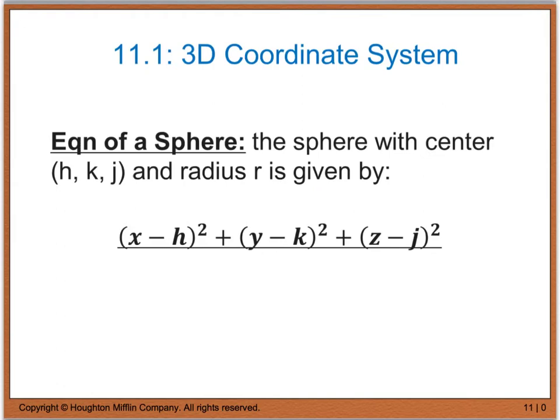Just as when we were dealing with a 2D coordinate system and we were dealing with a circle, now we have a 3D coordinate system, so we can deal with shapes like spheres. When we're dealing with a sphere, the general equation is very similar to that of a circle, but we have to add that third dimension. So now we have a center point that is h, k, and j. We still have the radius r, and the equation of our sphere is going to be given by the quantity of x minus h squared, plus the quantity of y minus k squared, plus the quantity of z minus j squared equals your radius squared.